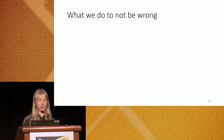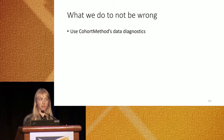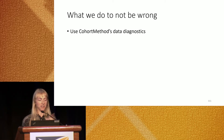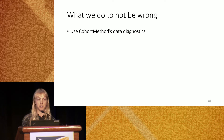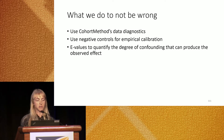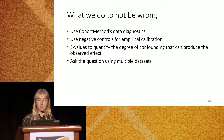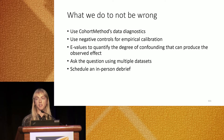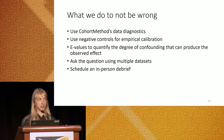In addition to our software and personnel design, there are several things we do to avoid being wrong analytically. We use the cohort method package for analysis, including data diagnostics from matching with attrition diagrams balanced before and after matching. We use positive and negative controls to assess false positive and false negative rates and to empirically calibrate effect estimates. We include E-values with every report to quantify the degree of confounding needed to produce an observed effect. We assess concordance across multiple data sets and schedule an in-person debrief to ensure clinicians are not misinterpreting results.